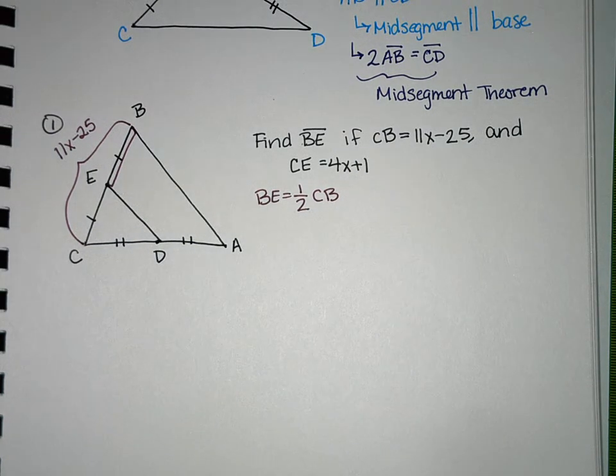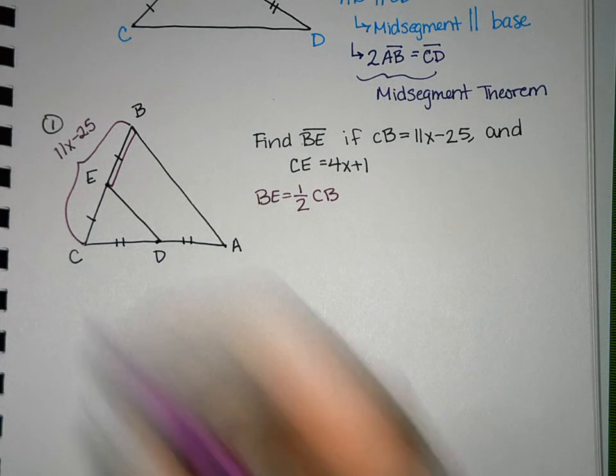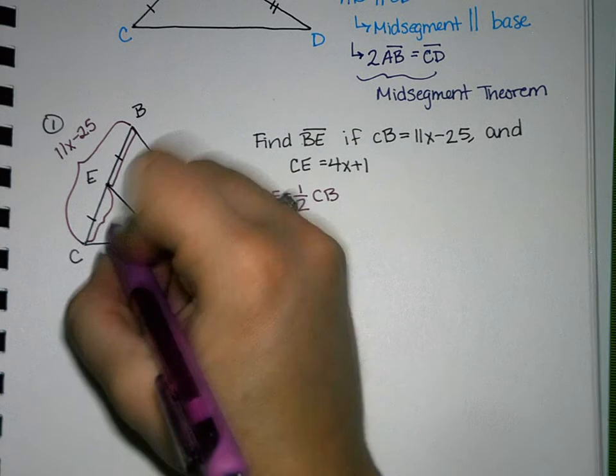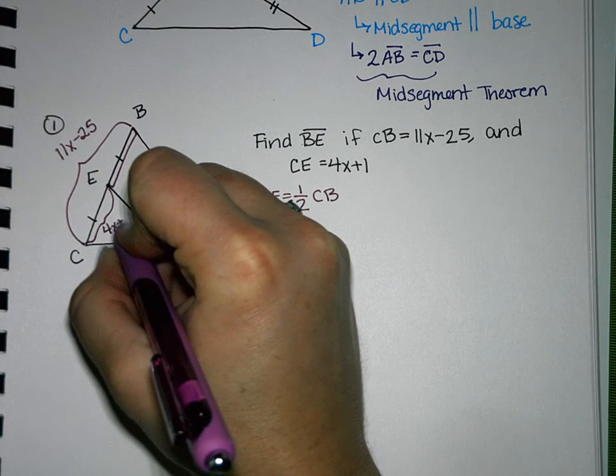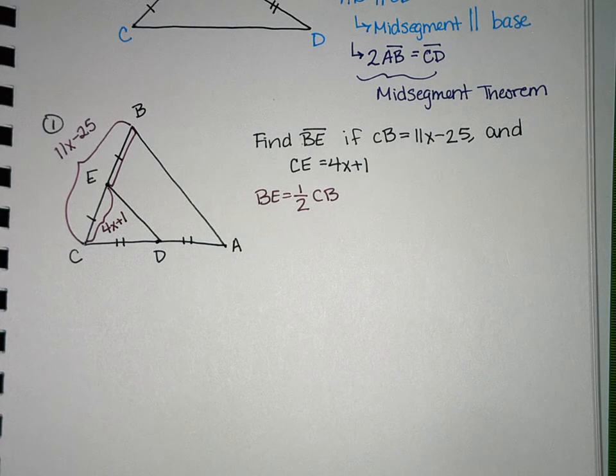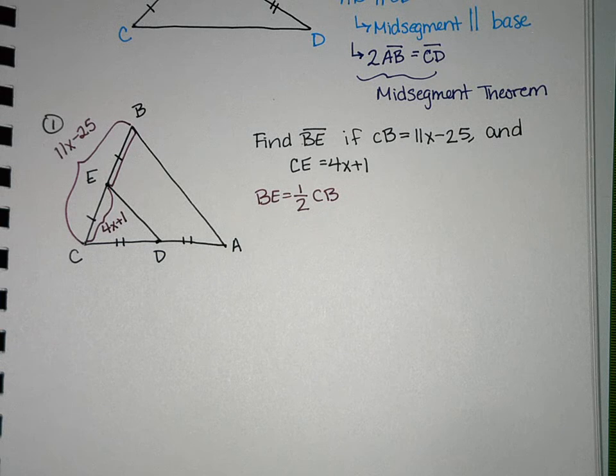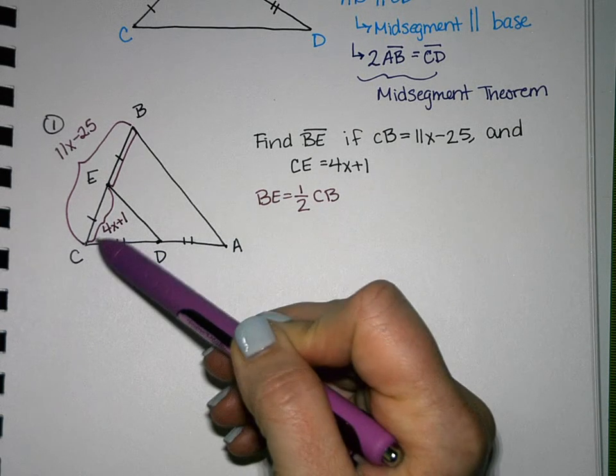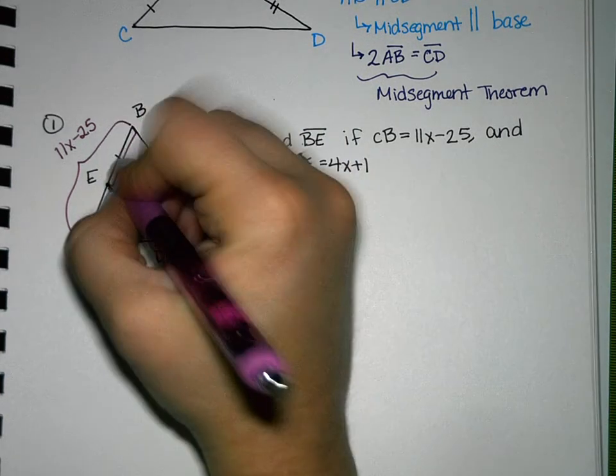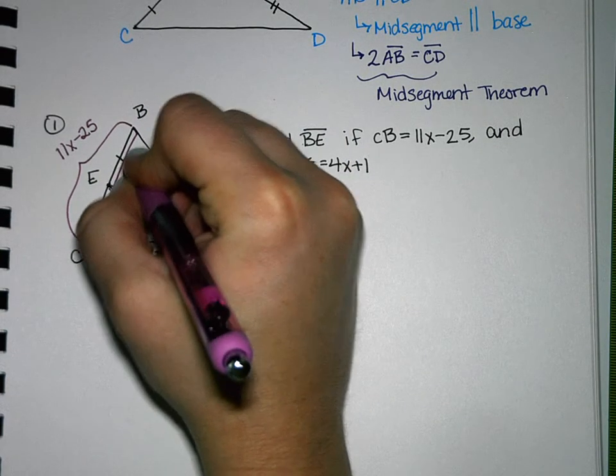Now it also tells us that CE, this length here, is 4X plus 1. How does that help us figure out BE? BE is also 4X plus 1 because CE and BE are the same. So I can say this is also 4X plus 1.